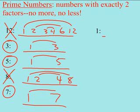Let's try 1. Sometimes people get confused on 1. 1 times 1. My factor rainbow is done. I have only one factor. Is that exactly two factors, no more or less? No, it's not. So I know 1 is not prime.